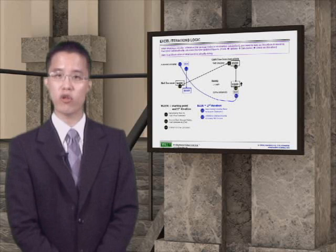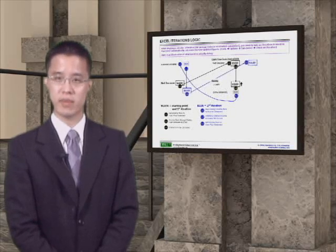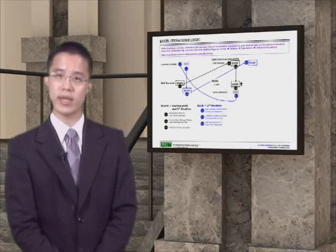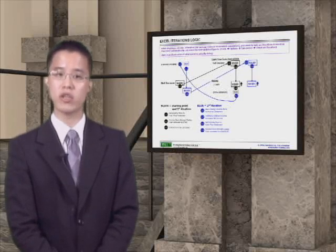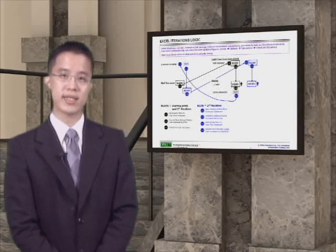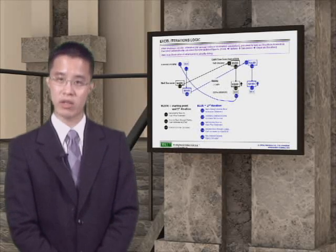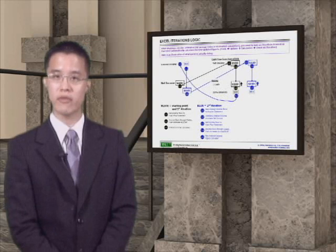This $110 flows back to net income on the cash flow statement under CFO, resulting in an increase in total cash of $110. At a 10% interest income rate, we have additional interest income of $1, for a total interest income of $11.